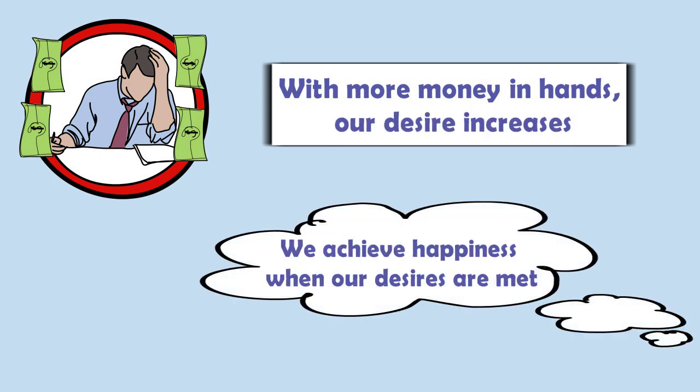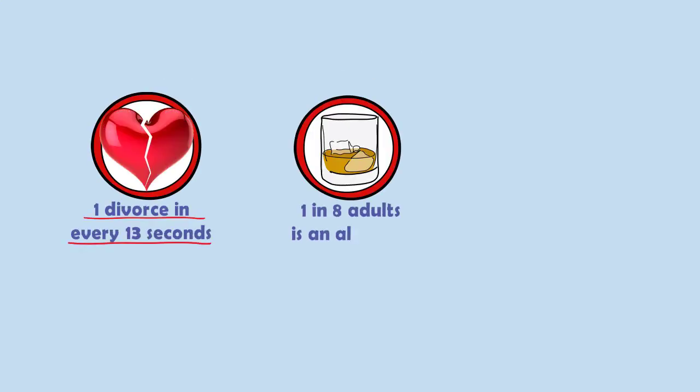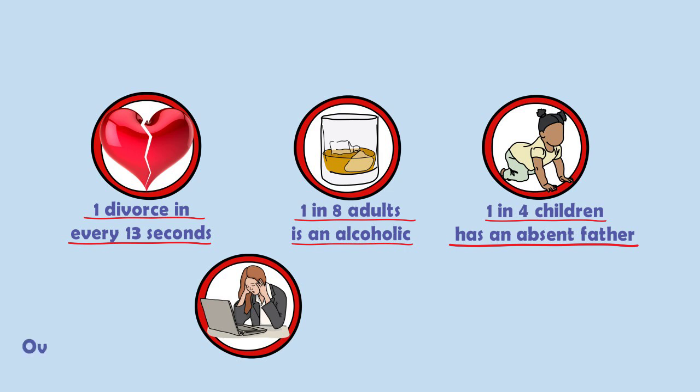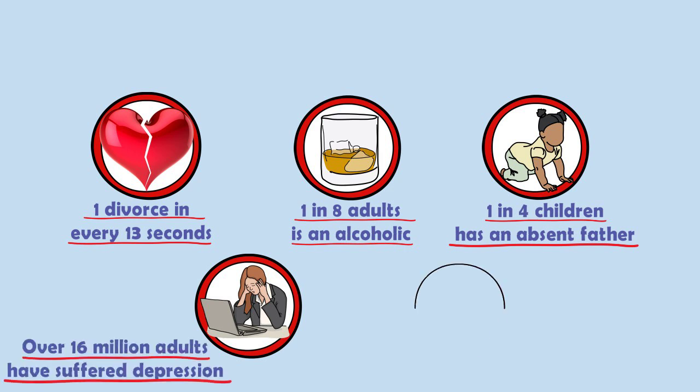We believe that we achieve happiness when our desires are met, and to afford this, you work hard and put in extra hours of work. You affect your health and may not have family time. It's one of the reasons why there's one divorce every 13 seconds, one in eight adults is an alcoholic, more than one in four children has an absent father, and over 16 million adults are said to have gone through depression in the United States itself.